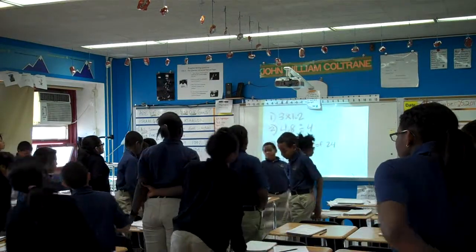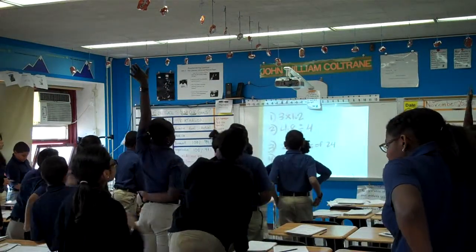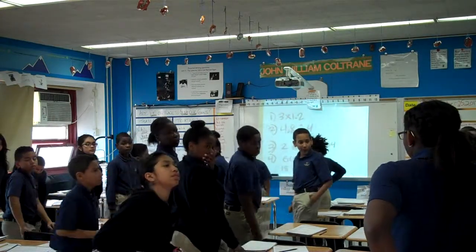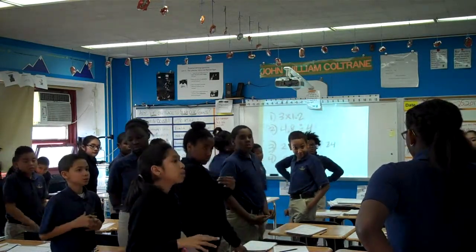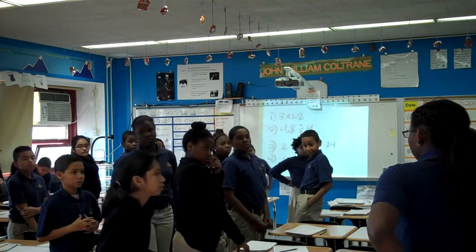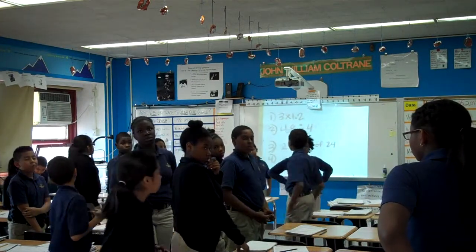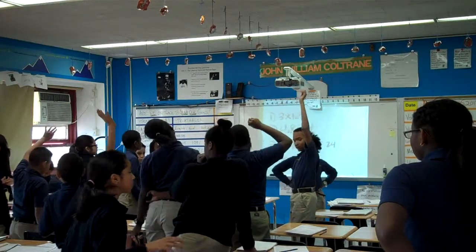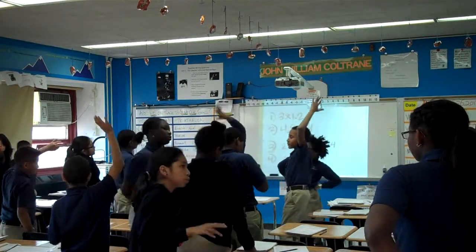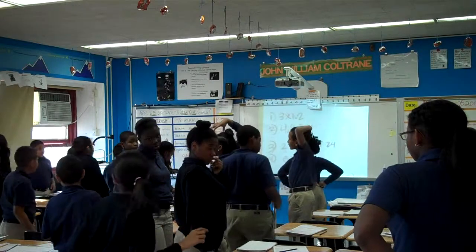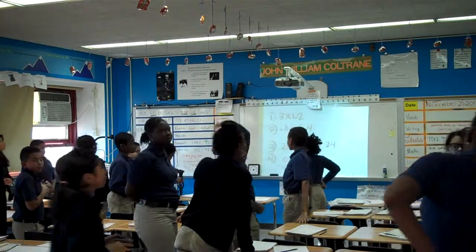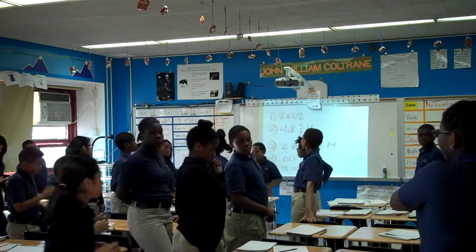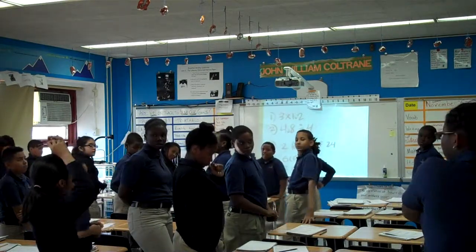Number two: four and eight tenths divided by four. Yolanda, turn it right. Two and four tenths. Four and eight tenths divided by two would be two and four tenths. What did you say? One and two tenths. Correct. Give me that sentence again. Four and eight tenths divided by four equals one and two tenths. Good.